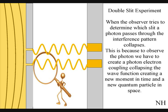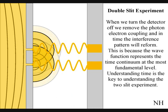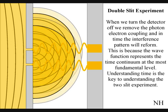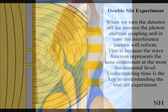If we turn the detector off, we remove the photon-electron coupling, and in time, the interference pattern will reform. Just like in Newton's first law of motion, the interference pattern will continue to maintain its state unless acted upon by an external force.